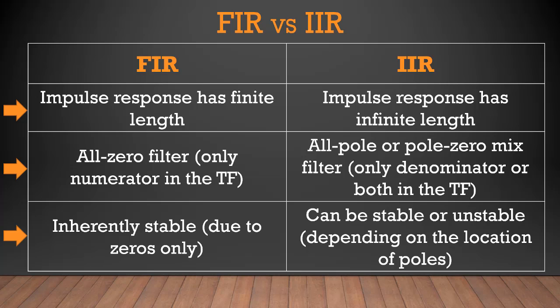If you are talking about a discrete time IIR filter, then if the poles are located inside the unit circle, then the IIR filter will be stable. And if we are talking about a continuous time IIR filter, then if the poles are located on the left-hand side of the Y axis, it means that the IIR filter will be stable. For both cases, I am assuming that the system is causal.